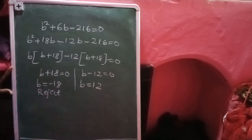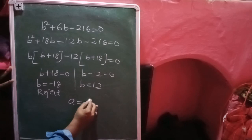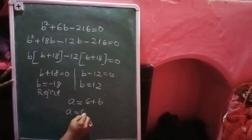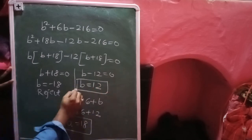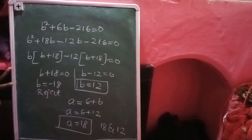b = -18 we must reject since a side cannot be negative. So b = 12. Using equation 2: a = 6 + b = 6 + 12 = 18. So one square has side 18 meters and the other has side 12 meters. That is our answer: 18 and 12. This completes the exercise.